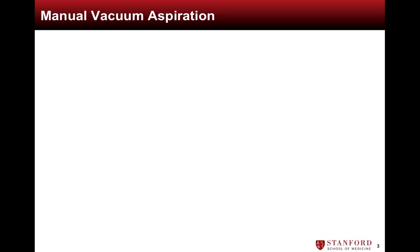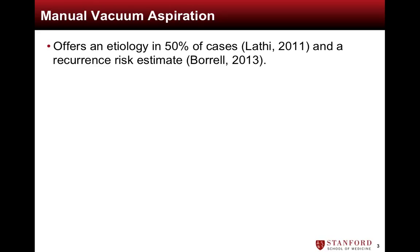Manual Vacuum Aspiration, or MVA, followed by chromosome analysis of miscarriage tissue is a valuable tool for understanding the cause of a miscarriage. In up to 50% of cases, an etiology for the miscarriage can be identified from chromosome analysis, offering patients a concrete explanation for the pregnancy loss and an estimate of the risk of recurrence.